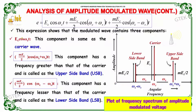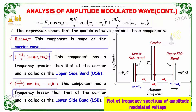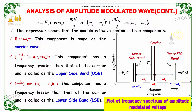The first component is the same as the carrier wave. The second component has a frequency greater than the carrier and is called the upper sideband. The third component has a frequency less than the carrier and is called the lower sideband. So the AM wave consists of the carrier, upper sideband, and lower sideband.